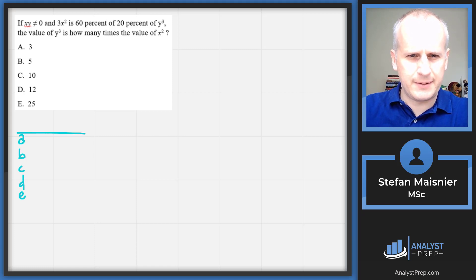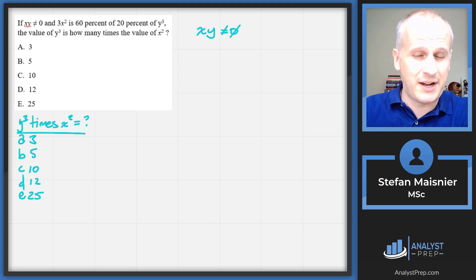Label out on top for when we look for what the question is seeking. We've got 3, 5, 10, 12, 25, which are just some simple numbers, so we'll write those out. So then we skip to the end. The value of y cubed is how many times the value of x squared? So y cubed times x squared equals question mark. We then immediately start taking notes as we go. So we know that x, y does not equal zero. So that means that neither x nor y individually is zero. And 3x squared equals 60%, so 0.6 times 20%, so 0.2 of y cubed.